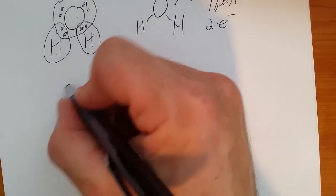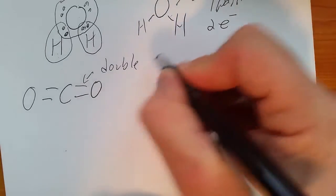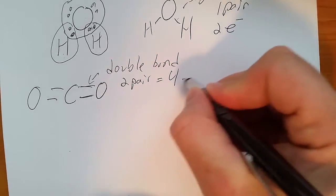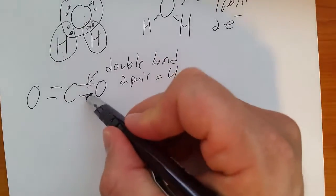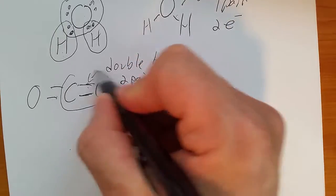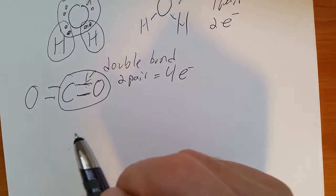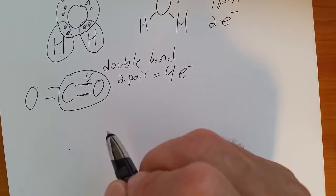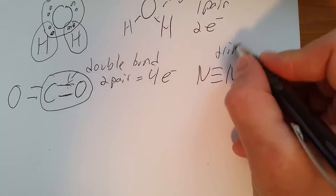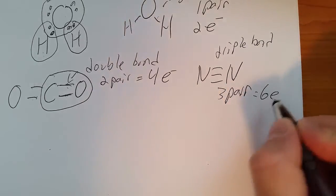You can also have double bonds. C double bonded with O for example. Each of these double bonds, there's one, two pair or four electrons. So there's two pair of electrons here, two pair of electrons here. If the question asks how many pairs of electrons are shared between a carbon and an oxygen, two pair or four electrons. You always have to pay close attention to the question. You can have a triple bond. There's a triple bond. There's three shared pair or six electrons.